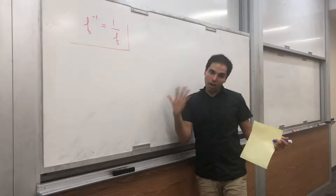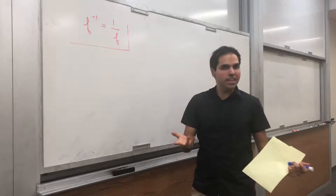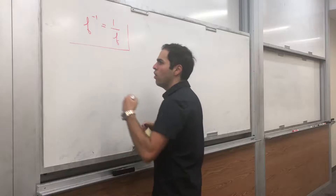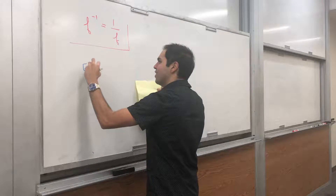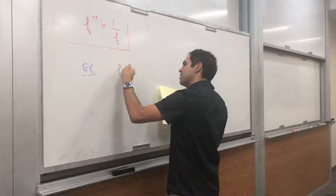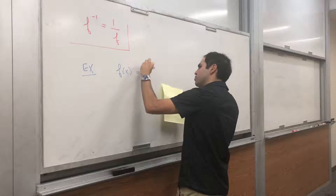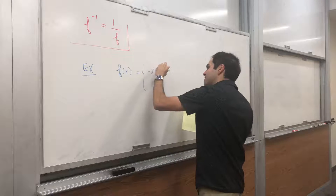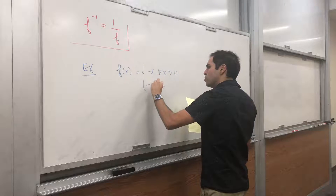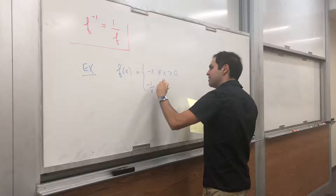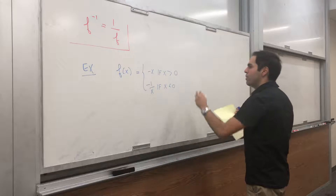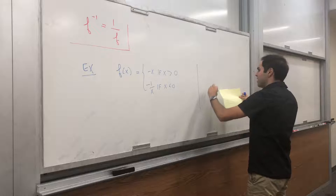What do I mean by that? Of course, there are examples that show that it could be true sometimes. For example, let's take this function: f of x equals minus x if x is positive, and minus 1 over x if x is negative.